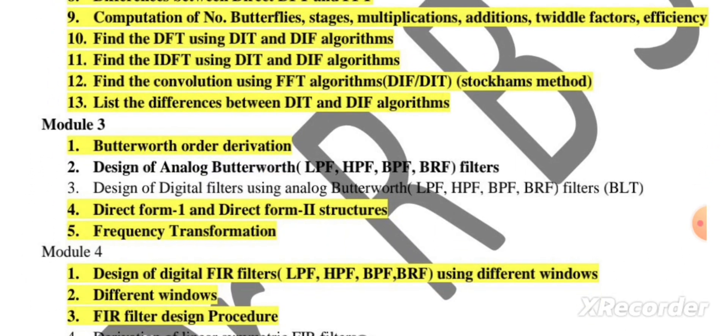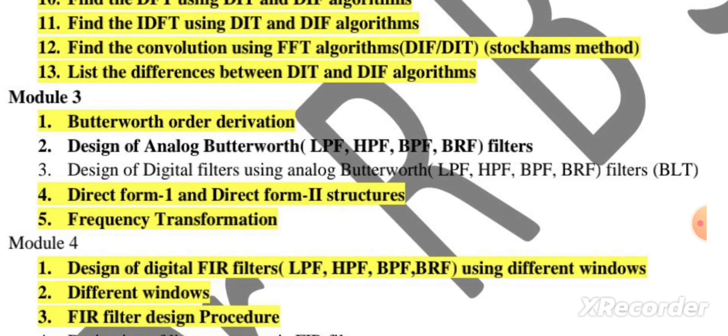Then come to Module 3, it is of filters. Usually design of analog filters like low pass, high pass, band pass, band reject filters. Derivation of Butterworth order filter and design of digital filters using analog Butterworth also may be asked. Direct form 1 and direct form 2 structures and frequency transformation. This is about Module 3. You can expect design of filters and one derivation.